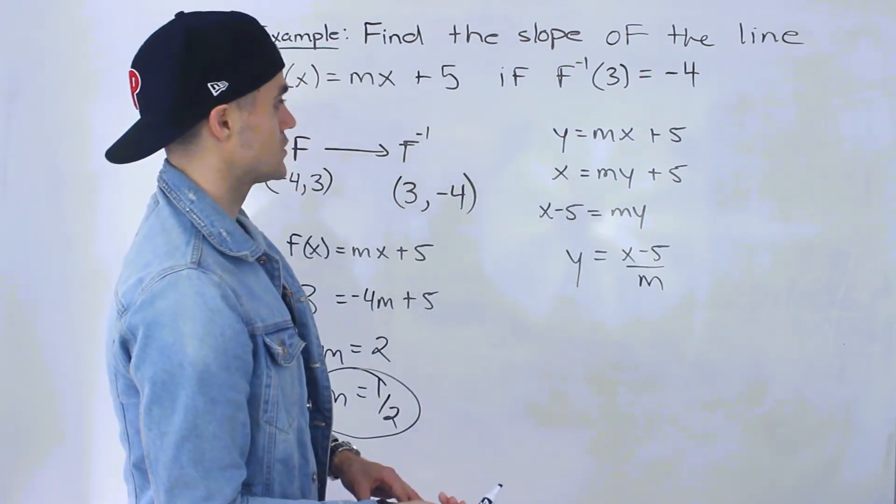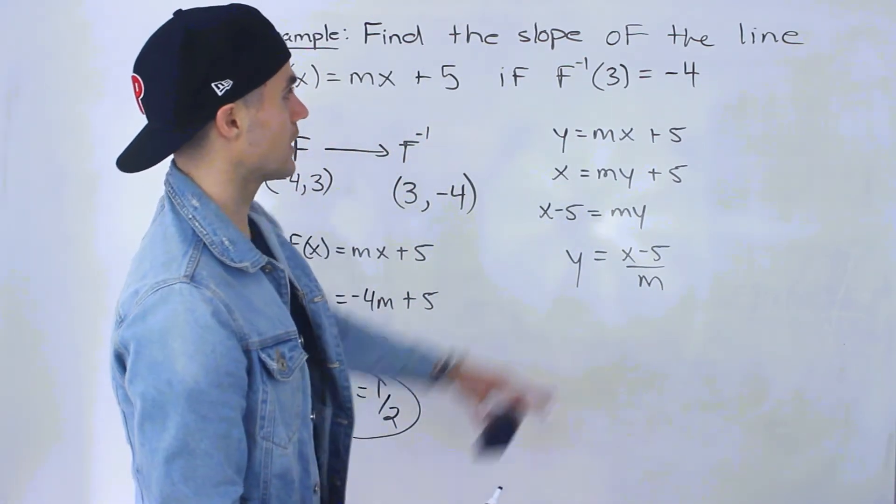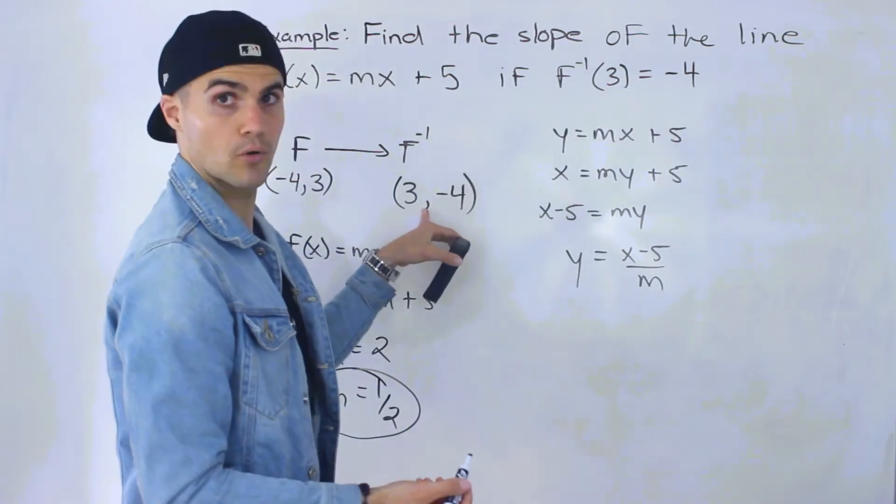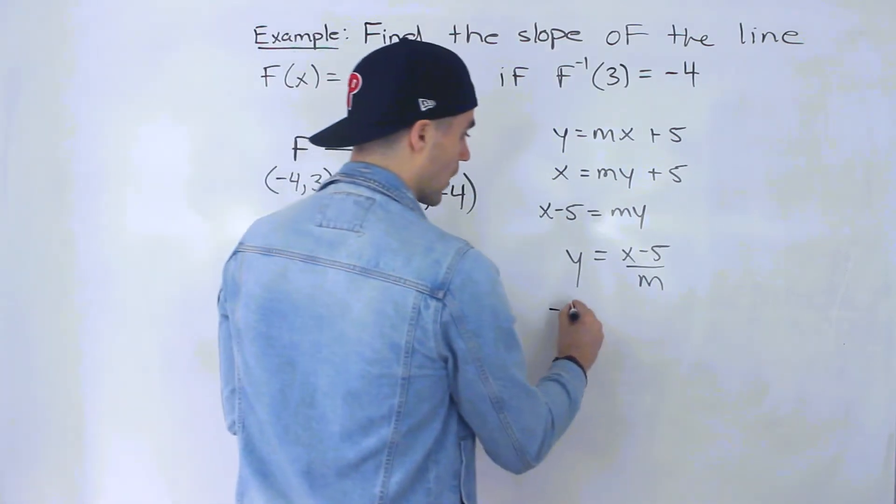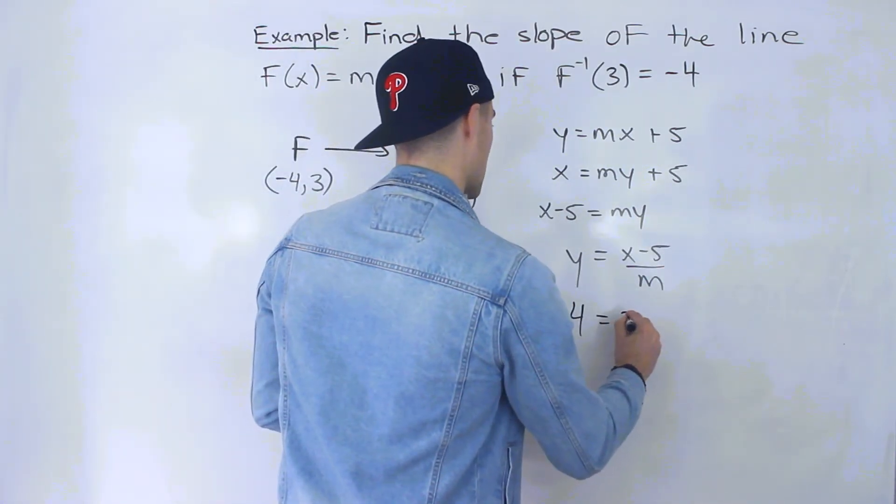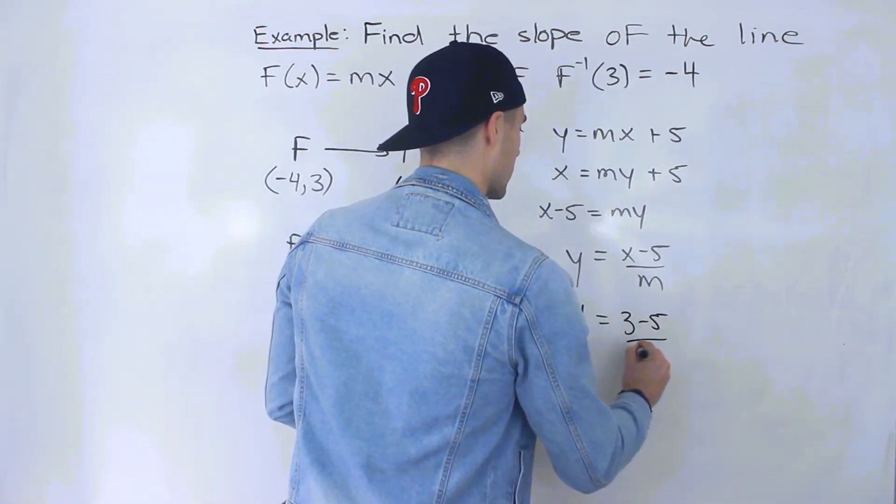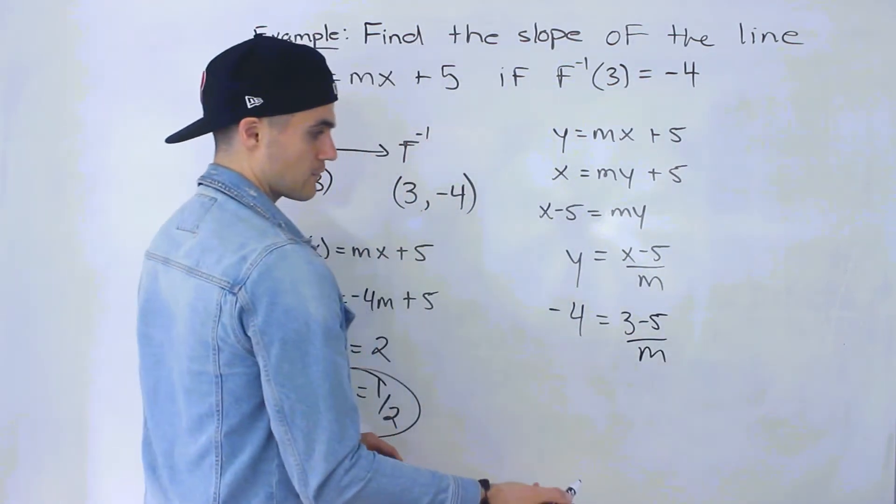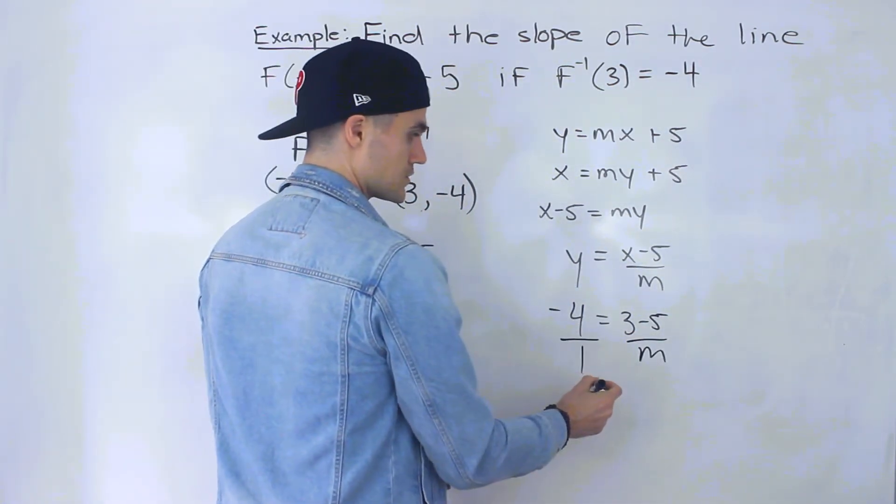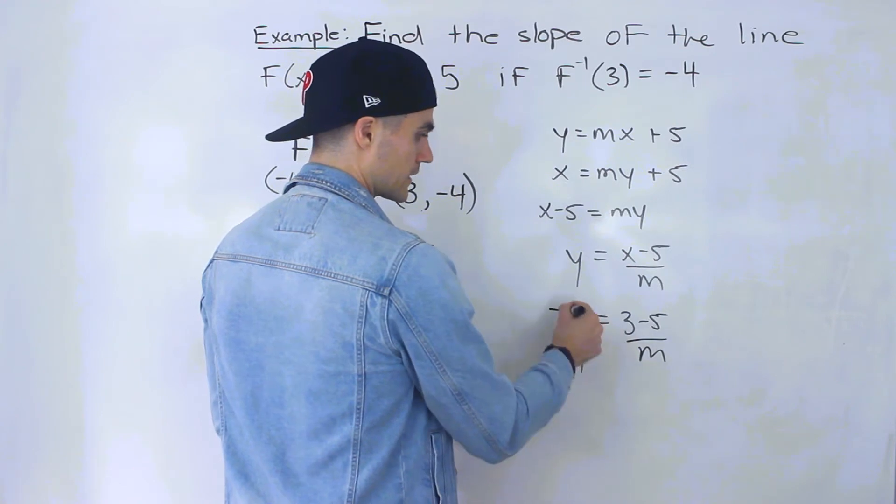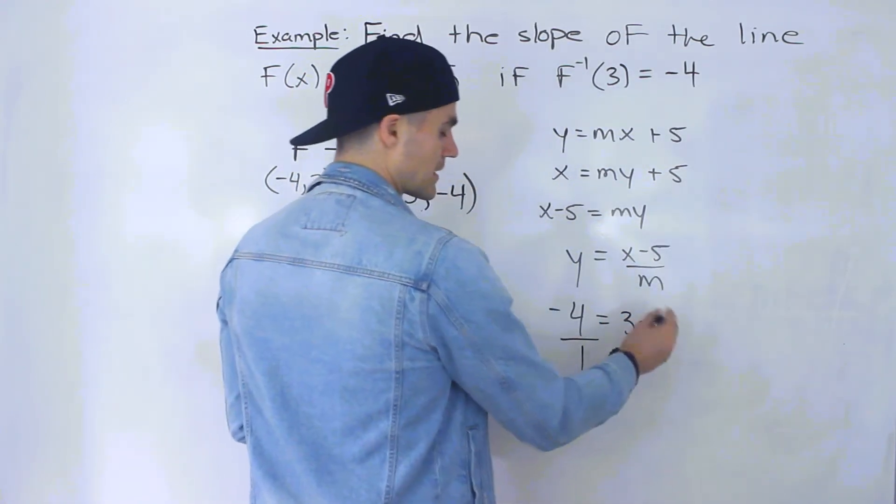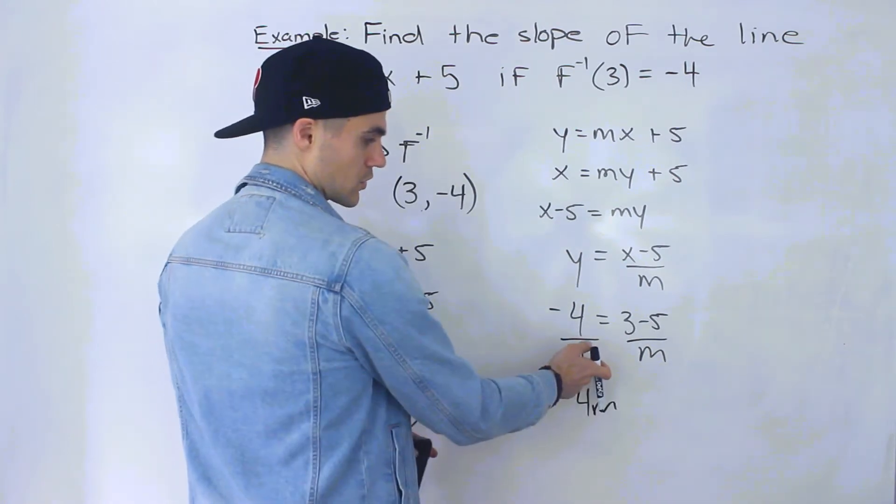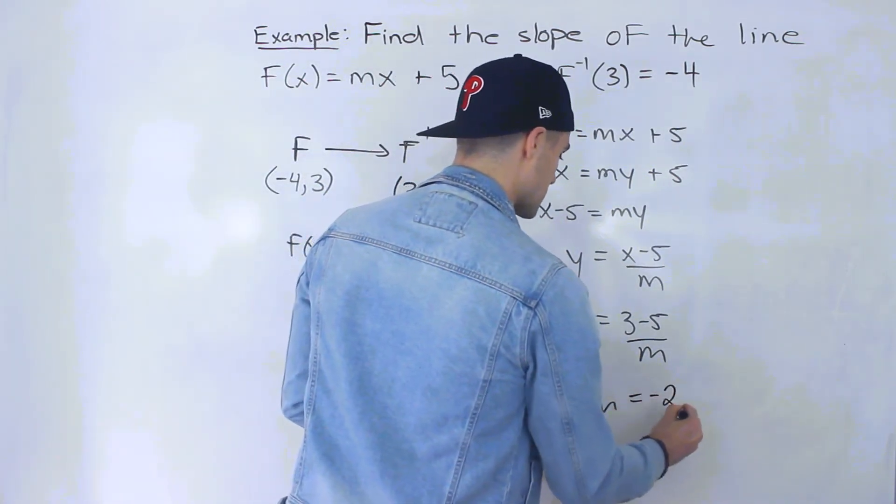And so now what we can do is plug in this point for the x and y values. So we plug in 3 for the x, negative 4 for the y, and now we could solve for that m value. So what we can do is cross multiply, negative 4 times m is -4m. Then 3 minus 5 gives us negative 2, cross multiply times 1, that would be -2.